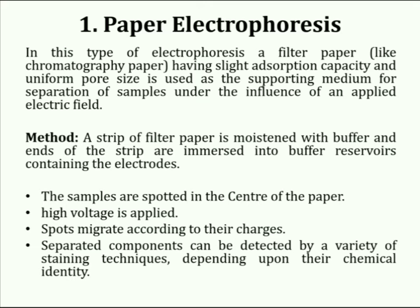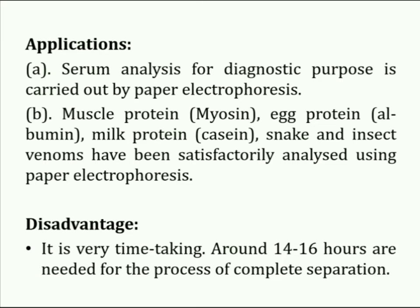After electrophoresis, the separated components can be detected by a variety of staining techniques depending upon their chemical identity. Applications of paper electrophoresis include serum analysis for diagnostic purposes, detection of myosin which is a muscle protein, albumin an egg protein, and casein a milk protein. Snake and insect venoms are also detectable by paper electrophoresis. The only disadvantage of this method is that it is a very time-consuming process.